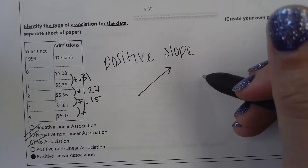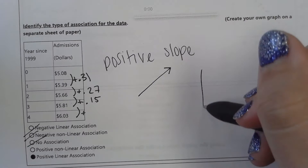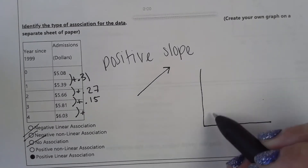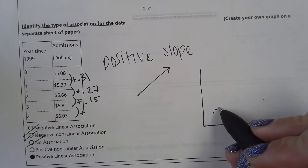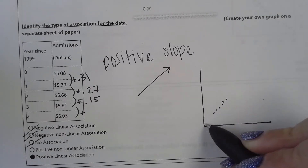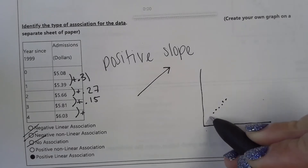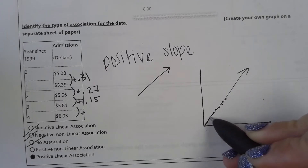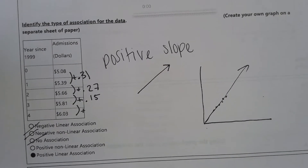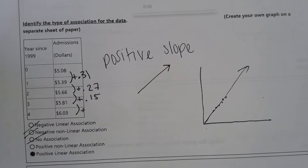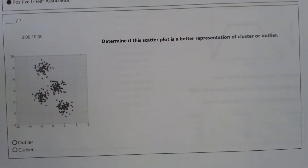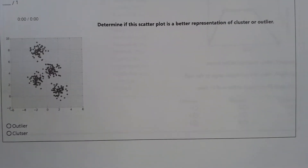So this answer should be a positive linear association. If you were to graph it, you'd notice all of your points are fairly close to each other and the graph is going to look something like a straight line. Alright, question number two: determine if this scatter plot is a better representation of cluster or outlier.